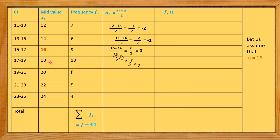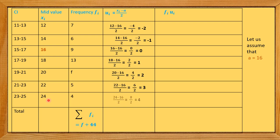Continuing ui values: for x=20, u = (20−16)/2 = 2; for x=22, u = (22−16)/2 = 6/2 = 3; for x=24, u = (24−16)/2 = 8/2 = 4. Now we have all the ui values.